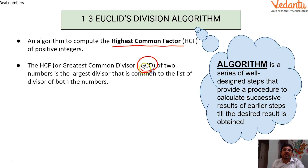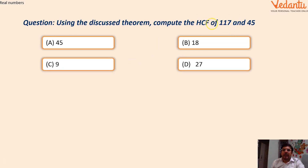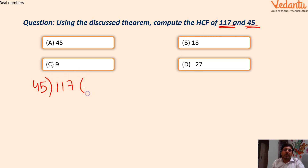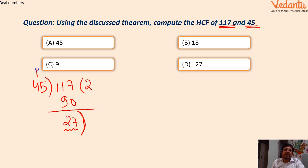Let's start with the first question: find the HCF of 117 and 45. We can do prime factorization, but I want you to learn a new method. The smaller number is taken as the divisor and the larger as the dividend. Dividing 117 by 45: 45 goes 2 times giving 90, so the remainder is 27. Whatever is the remainder becomes the new divisor, and the previous divisor becomes the new dividend.